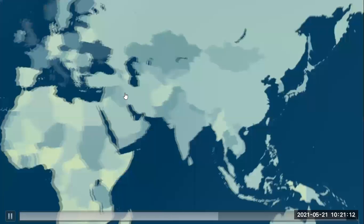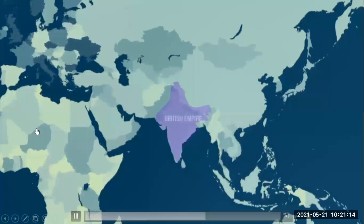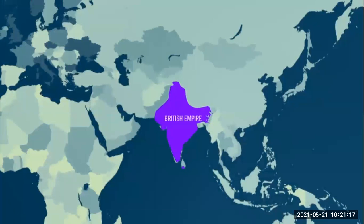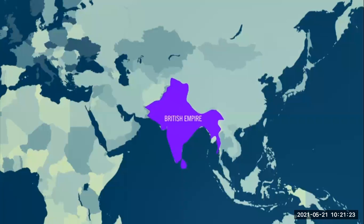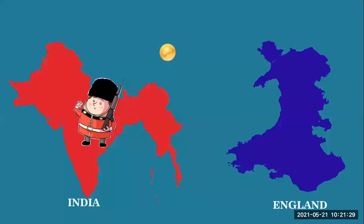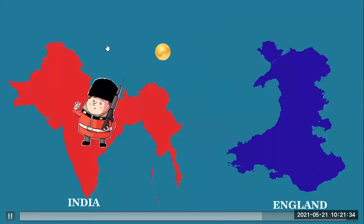From 1600 to 1857, the company reigned supreme in India and other Asian and African countries, colonizing many areas and extending British power. Perhaps the biggest colony in British possession at that time was India, both in terms of size and extent. Having a foothold in a country that was a gateway between the East and the West proved to be a jackpot for them.